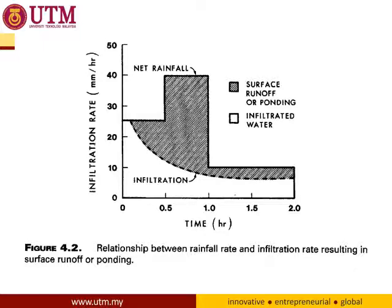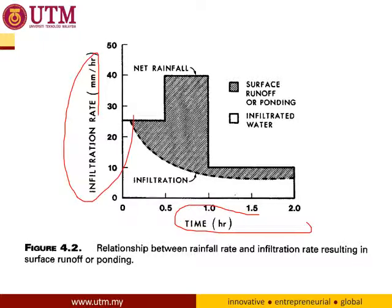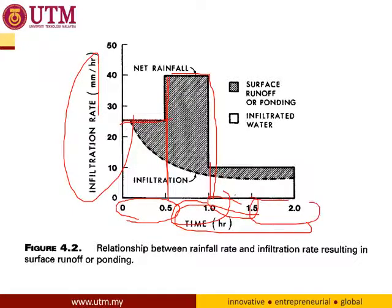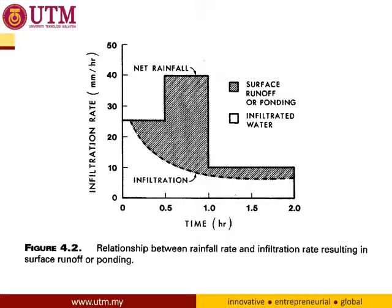We may plot the infiltration rate against time. We may also plot the rainfall hyetograph — let's say we have a record of rainfall every 30 minutes. The important thing is we want to know the infiltration curve, because we want to separate how much water becomes net rainfall. Net rainfall, or excess rainfall, is the rainfall that will become surface runoff. We also want to know how much infiltrates beneath the infiltration line.